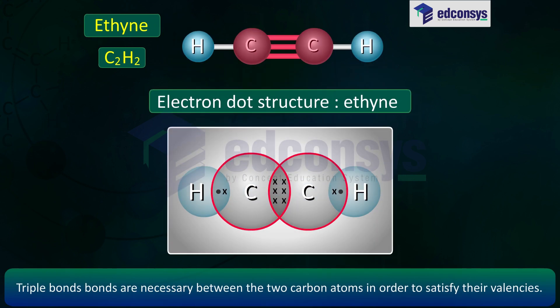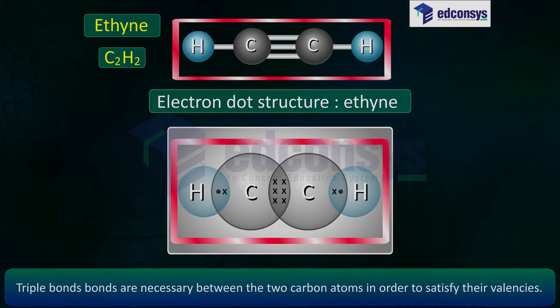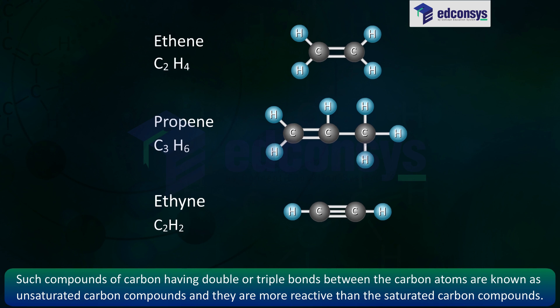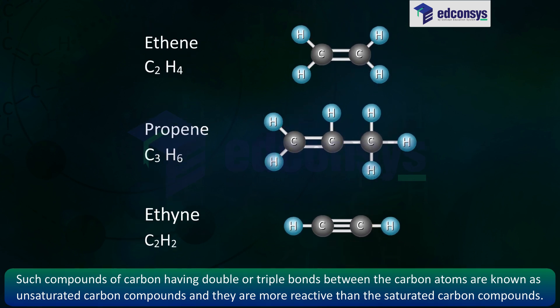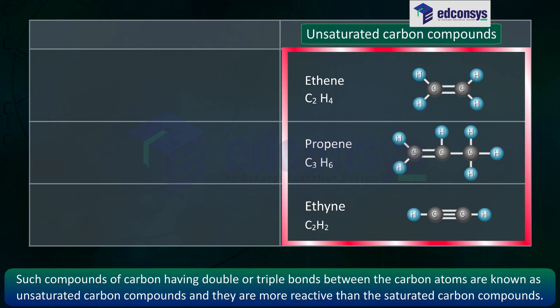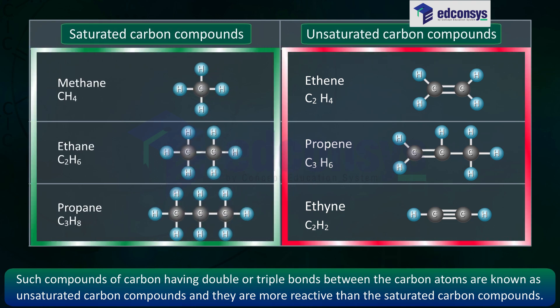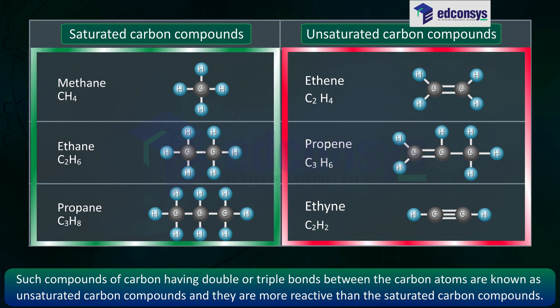Triple bonds are necessary between the two carbon atoms in order to satisfy their valencies. Such compounds of carbon having double or triple bonds between the carbon atoms are known as unsaturated carbon compounds and they are more reactive than the saturated carbon compounds.